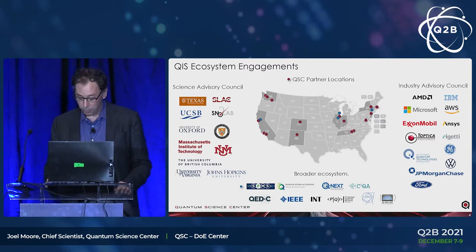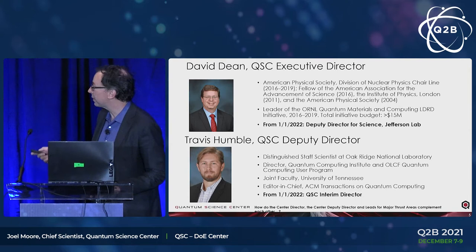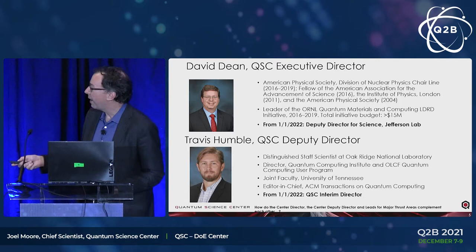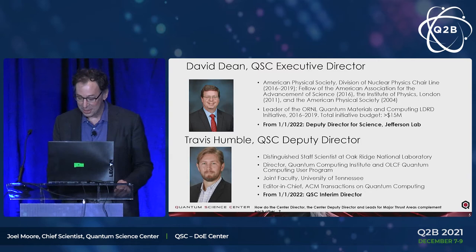We have some turnover, but it's a good thing. Our founding director, David Dean, a nuclear physicist by training, was appointed deputy director for science of Jefferson Lab. Our deputy director Travis Humble — a quantum chemist with a great deal of interest in quantum information — is stepping in as interim director. Until this point he's been in charge of our industrial relationships, so he's someone you might have on your radar. I have his email later for more detailed ways we could help you, or you could help us.